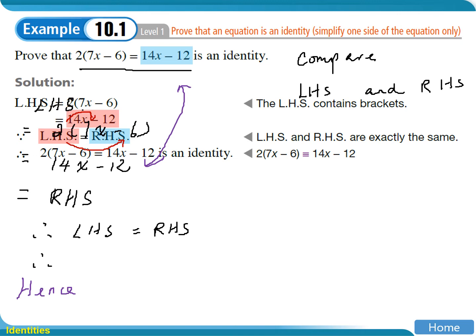And then 2 times 7x minus 6 equals 14x minus 12 is an identity.